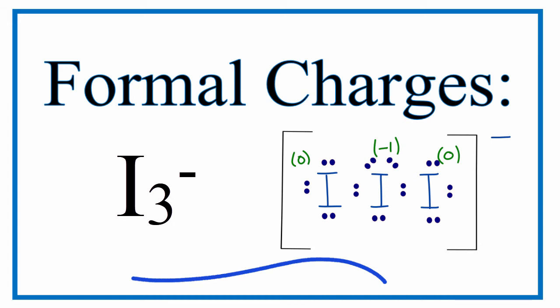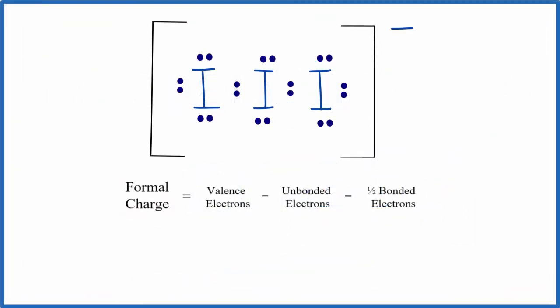To calculate the formal charge for each of the iodines in the I3 minus Lewis structure, let's first look at the Lewis structure we have for I3 minus.